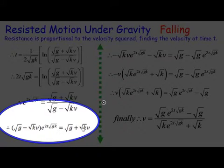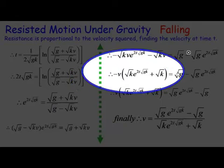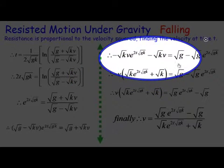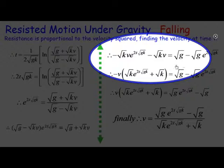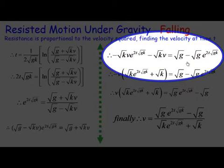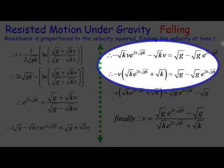Now we've got these on one side and we take out the v as a common factor using a negative sign to switch it around, but then divide through by the common factor root k e to the 2t root gk plus root k.